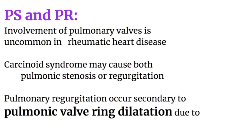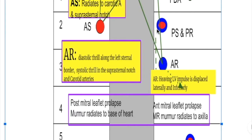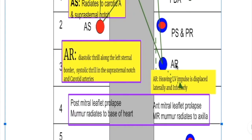Coming to pulmonary stenosis and pulmonary regurgitation: both are located in the left second intercostal space, to the left of the sternum. Pulmonary stenosis produces a systolic murmur and pulmonary regurgitation produces a diastolic murmur. So to summarize: the second right intercostal space has the aortic stenosis murmur; the second left intercostal space has pulmonary stenosis and regurgitation murmurs; and the third left intercostal space has the aortic regurgitation murmur.